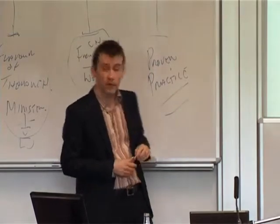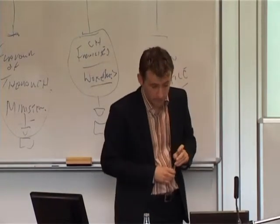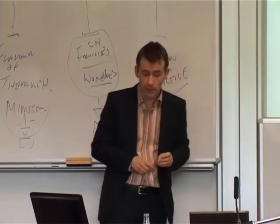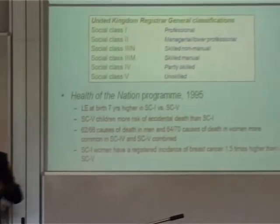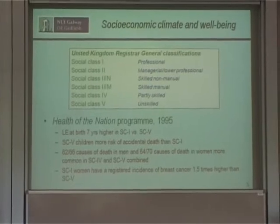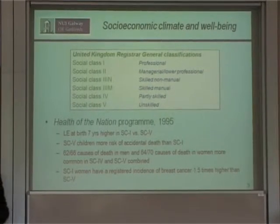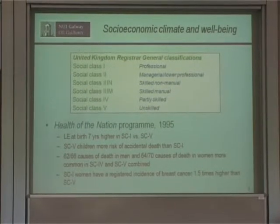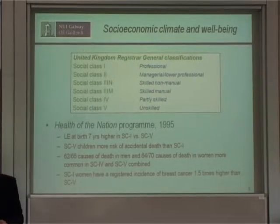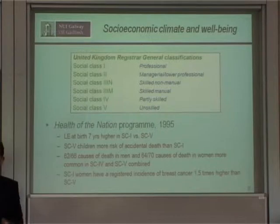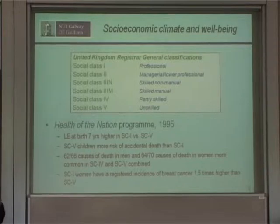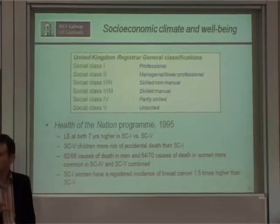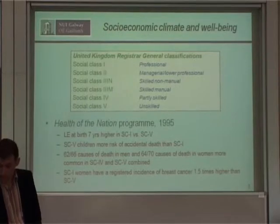Social class five children are more at risk of accidental death than social class one. Many causes of death typically seen in men and women are far more common in social class four and five combined than in other social classes. Interestingly, social class one women have a higher registered incidence of breast cancer than social class five — because it's more likely to be screened. A registered incidence is actually a good thing in breast cancer. There are all sorts of mechanisms that might associate the socio-economic climate with a person's physical wellbeing.